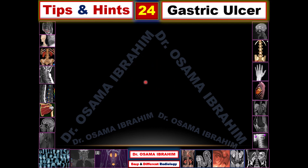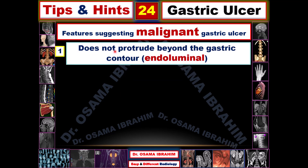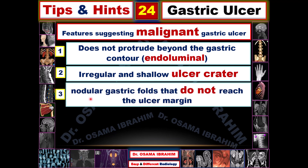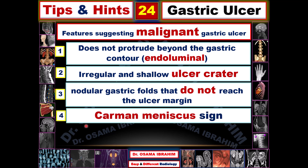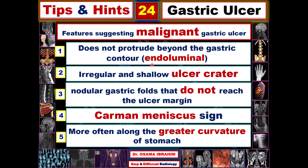Teaching in this way can help you make fewer mistakes differentiating benign from malignant gastric ulcer. The features of malignant gastric ulcer are the opposite: the ulcer does not protrude beyond the gastric contour — it is endoluminal. There is an irregular and shallow ulcer crater, nodular gastric folds that do not reach the ulcer margins, the Carmen meniscus sign, and location more commonly at the greater curvature.